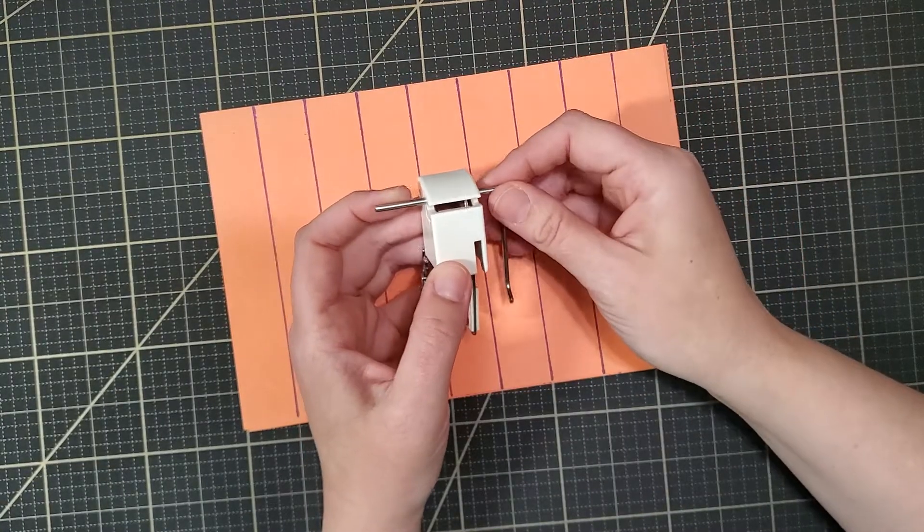And again, if you want to add more interest to the grid, you can go back and add another line to each line.